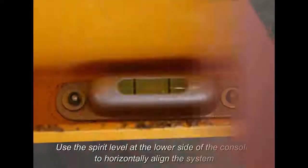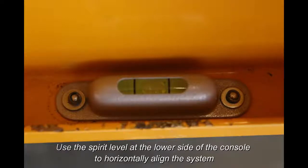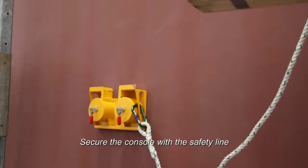Use the spirit level at the lower side of the console to horizontally align the system. Secure the console with the safety line.